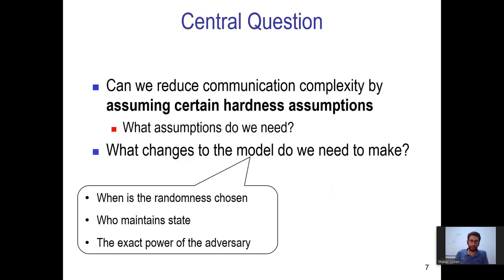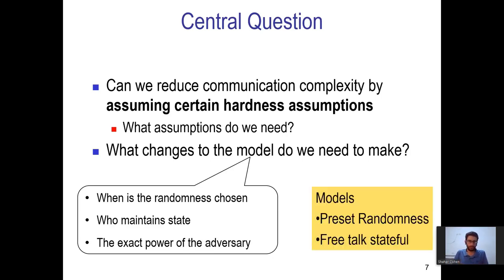Our central question is: can the communication complexity be reduced in a computational world? One motivation is to discuss settings closer to the real world. We discuss two computational variations.